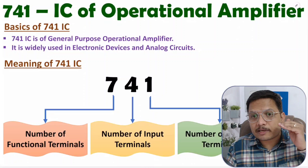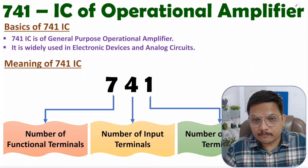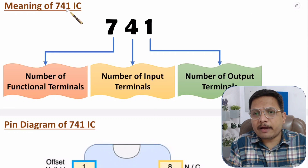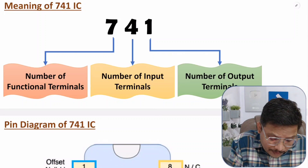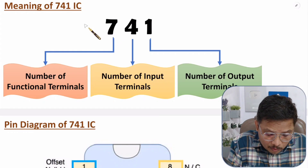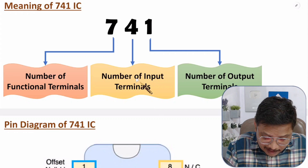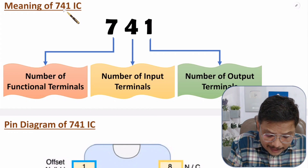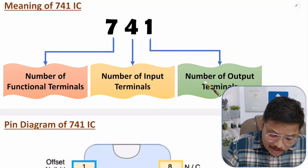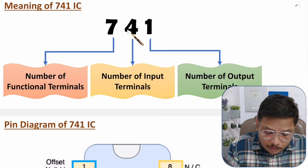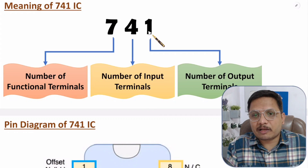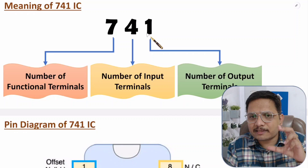Let us understand the meaning of '741.' With this IC, we have 8 terminals, of which 7 are functional terminals. Out of 8 terminals, 4 are input terminals and 1 is the output terminal. So the number 741 comes from: 7 functional terminals, 4 input terminals, and 1 output terminal.